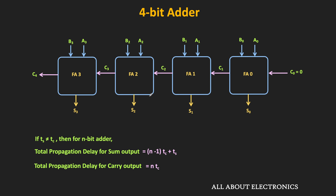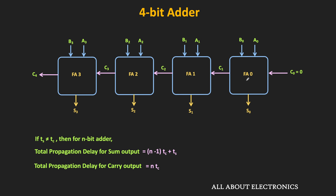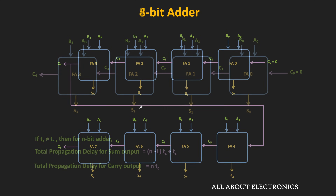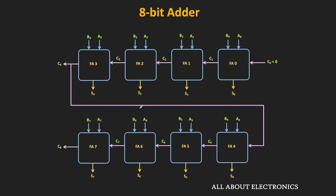In this parallel adder, the valid sum output is available only after the carry propagates through each stage. This is why this adder is also known as the ripple carry adder — the carry ripples through each full adder stage before it appears at the final stage. The time required for the carry to travel from the first stage to the final stage is known as the carry propagation delay, and this delay increases as the number of stages increases.